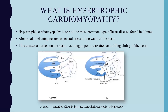First, let's explain what hypertrophic cardiomyopathy is. It is one of the most common types of heart disease found in felines. It basically causes an abnormal thickening in several areas of the walls of the heart, creating a burden on the heart which results in poor relaxation and filling ability.